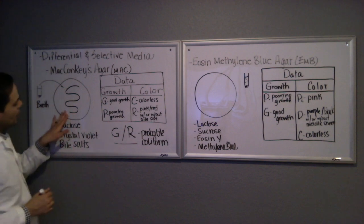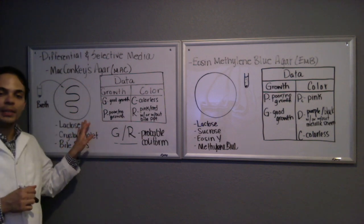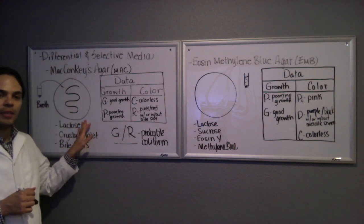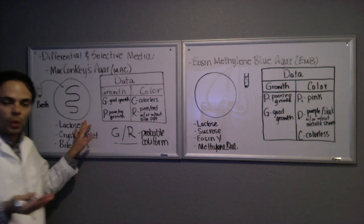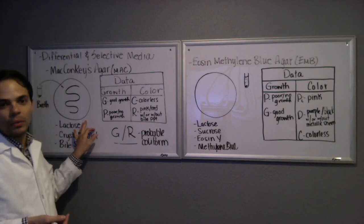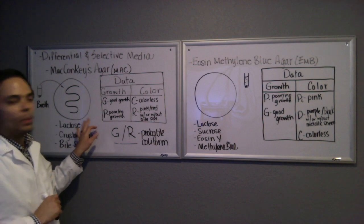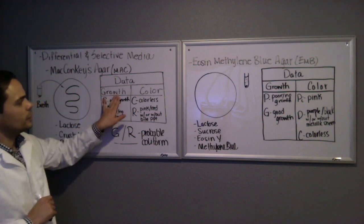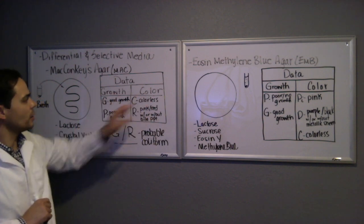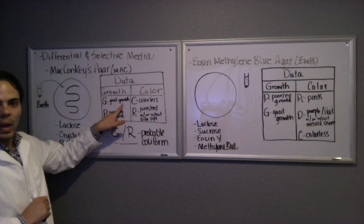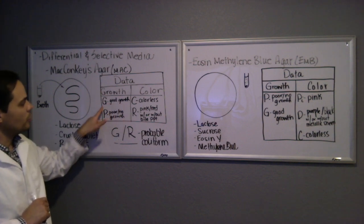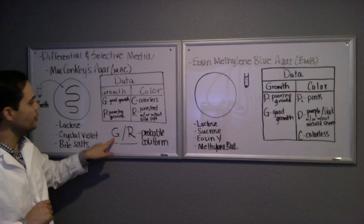Once you've inoculated this, what you want to do is incubate it overnight at 37 degrees Celsius, and some of the slow growers might take an extra 24 hours, so 24 to 48 hours. When you come back, what you want to do is look for two things: growth and color. If it grows well and there's good growth, you log G on your data sheet.